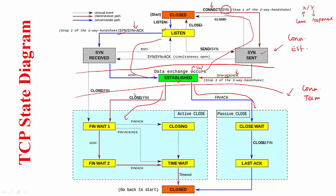Once the connection is established, data exchange begins — this is where the sliding window protocol comes into play, which we will see more of later. If the client were to close the connection, it issues the close command, and as a consequence the FIN packet gets sent and the client goes to the FIN WAIT 1 state. The server, when it receives this FIN packet, acknowledges it and goes to the CLOSE WAIT state. Once this ACK comes, the client moves to the FIN WAIT 2 state. Then when the server issues close, it sends a FIN packet, which arrives at the client, and the client sends an ACK.